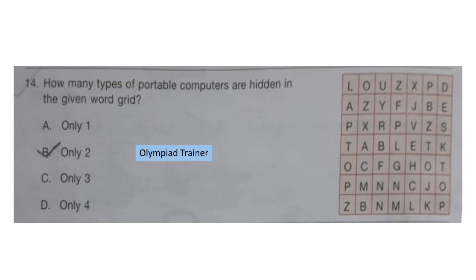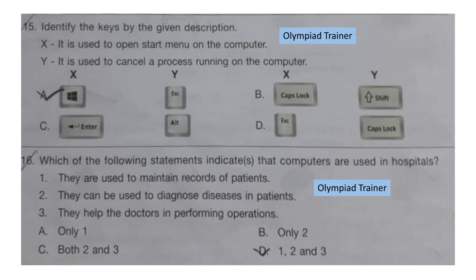Question 14: How many types of portable computers are hidden in the word grid? The correct answer is option B — only 2. You can see tablet and laptop are given. Question 15: Identify the keys by the given description. X: It is used to open the Start Menu on the computer. Y: It is used to cancel a process running on the computer. The correct answer is option A — X is the Windows button and Y is Escape.